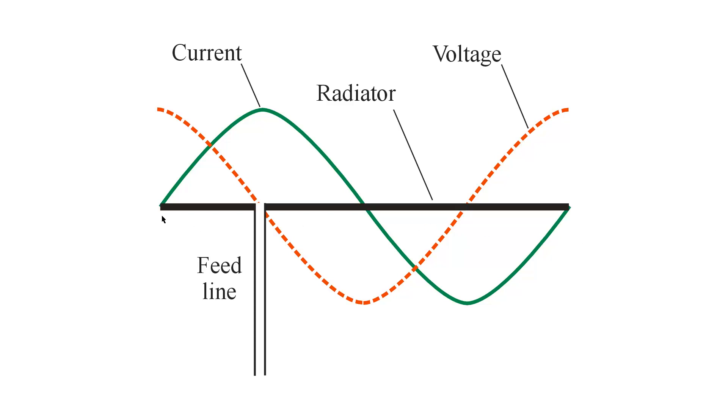Here I show a full wavelength radiator fed at a current loop. The distribution of current and voltage are shown as a green solid line for current and a red dashed line for voltage in this full wavelength antenna.